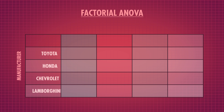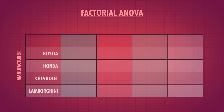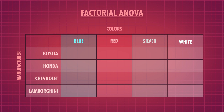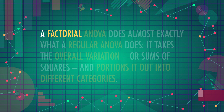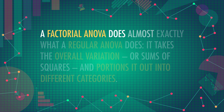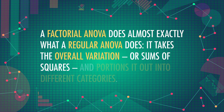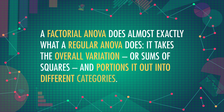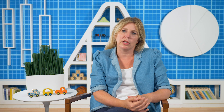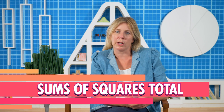In this case, we're going to look at Toyotas, Hondas, Chevrolets, and Lamborghinis, and include the colors blue, red, silver, and white. A factorial ANOVA takes the overall variation, or sums of squares, and portions it out into different categories. If we're interested in how car manufacturer and color affect price, we first calculate the overall variation in the dataset, called the sums of squares total.